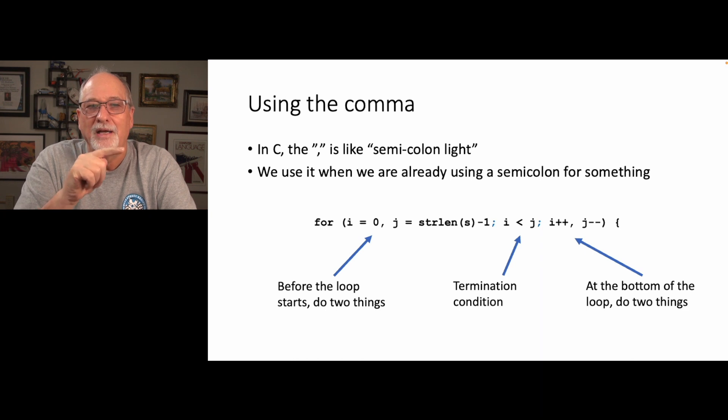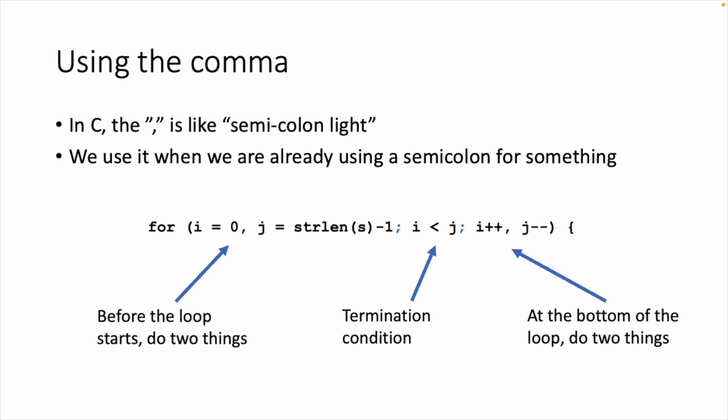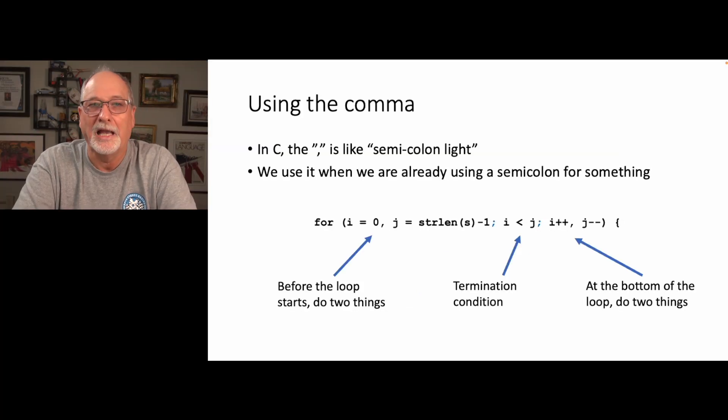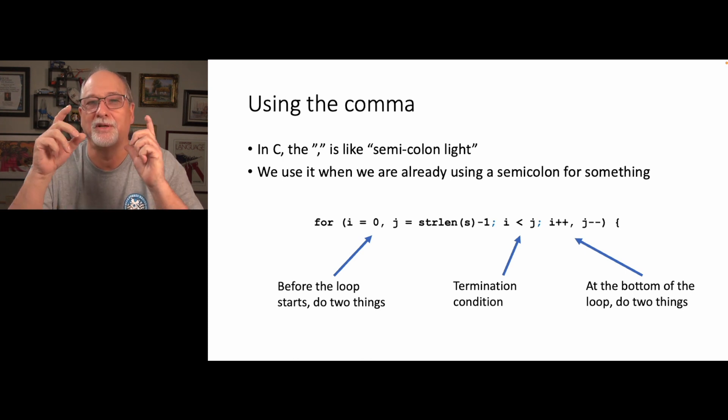So if we want to do like two statements, we're going to say i equals zero comma j equals strlen s minus one, with a comma in between to say do these two things before the loop starts. And then at the end, you say i plus plus comma j minus minus that says do these two things at the end of each loop. So I only see it in idiomatic situations. Just think of it as like we couldn't use a semicolon here. It functions exactly like a semicolon, although the syntax already has a semicolon in it. So I think it's actually a pretty clever way to say I want to put two statements in here.